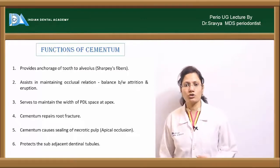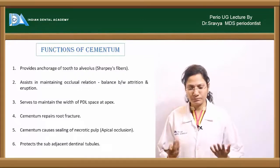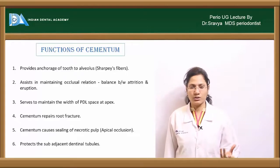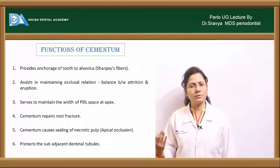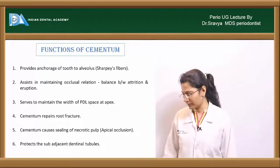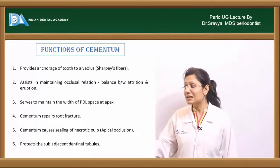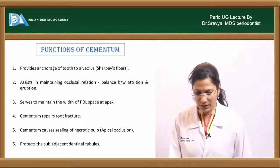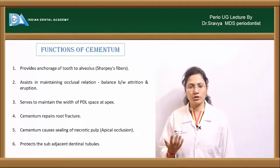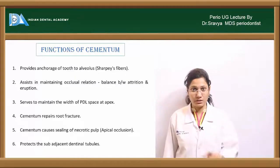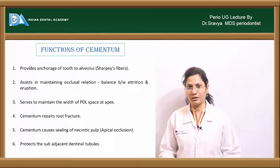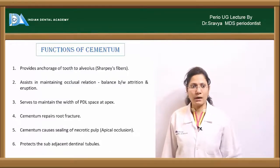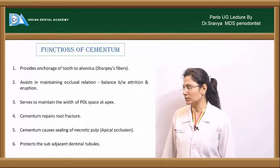Vertical root fractures have a very poor prognosis. A fourth function is sealing of necrotic pulp — cementum can seal off dentinal tubules to reduce hypersensitivity, and can occlude the apical foramen, preventing further progression of disease into periapical tissues.